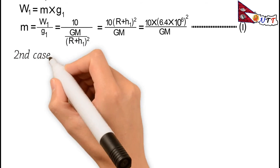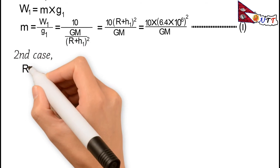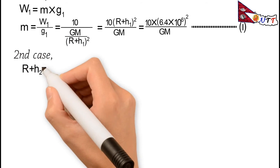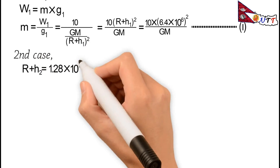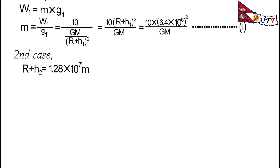For the second case, r + h₂ is equal to 1.28 × 10⁷ meters. We can note that r + h₂ equals 2 × (r + h₁).